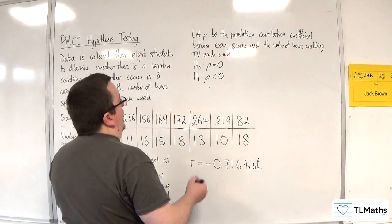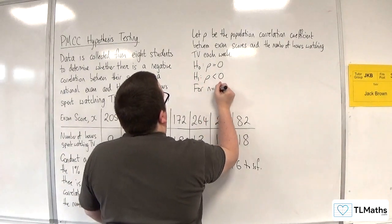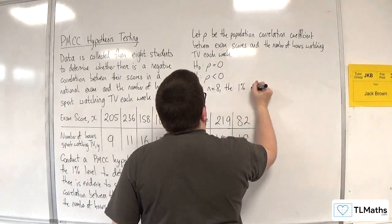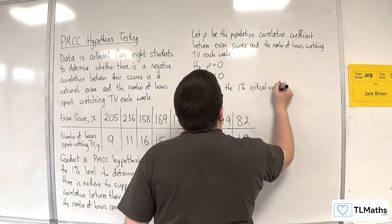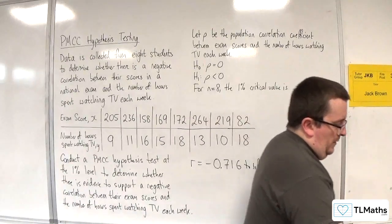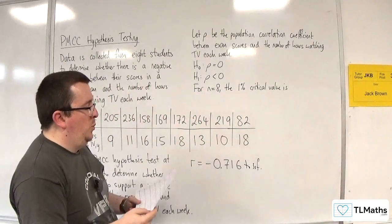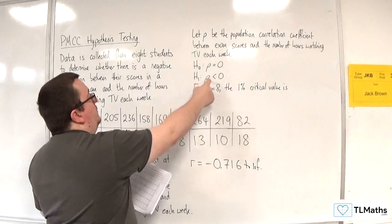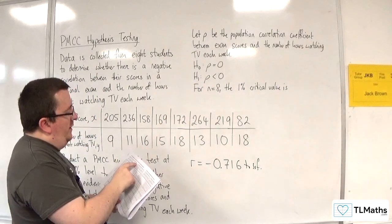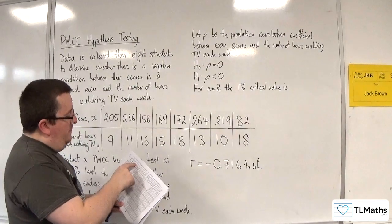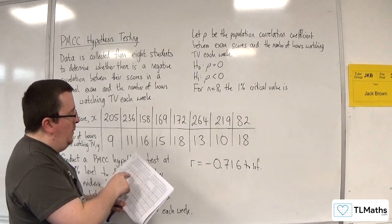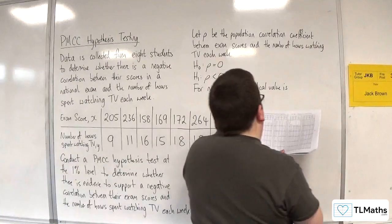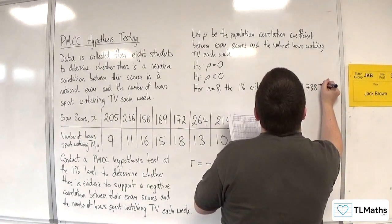Now we need to identify our critical value. So for n equals eight, we're looking at a 1% significance level this time. The 1% critical value is, so we go into our formula booklet, and on page 12, left-hand side for the PMCC, we want a one-tail test because it's a negative correlation going in one direction. So you want to go along one tail and then look down that column until you hit n is equal to 8. So that's 0.7887.